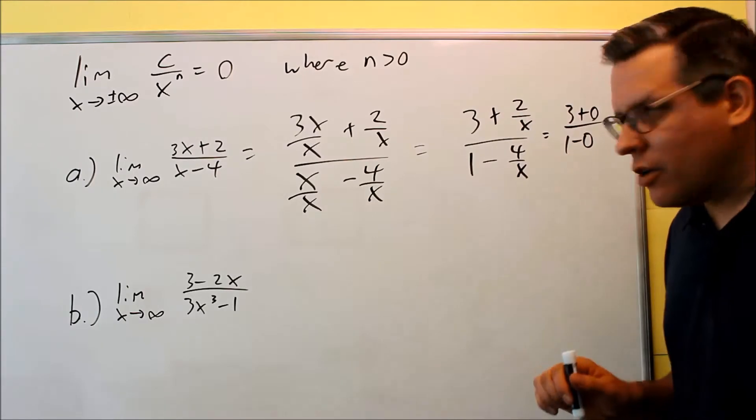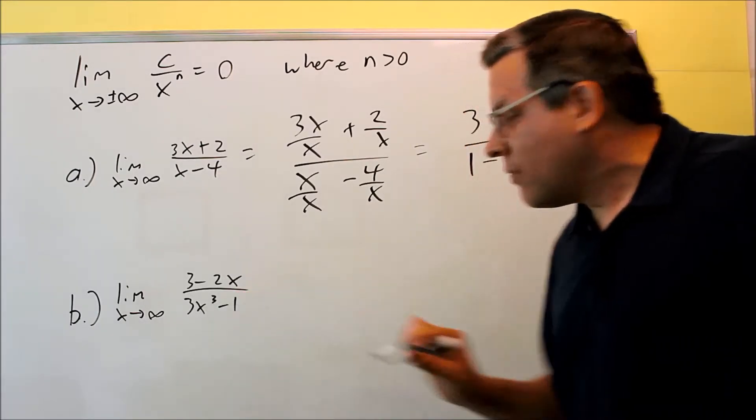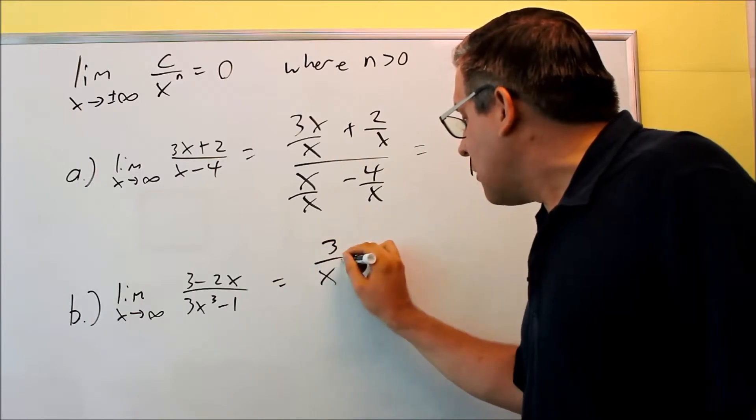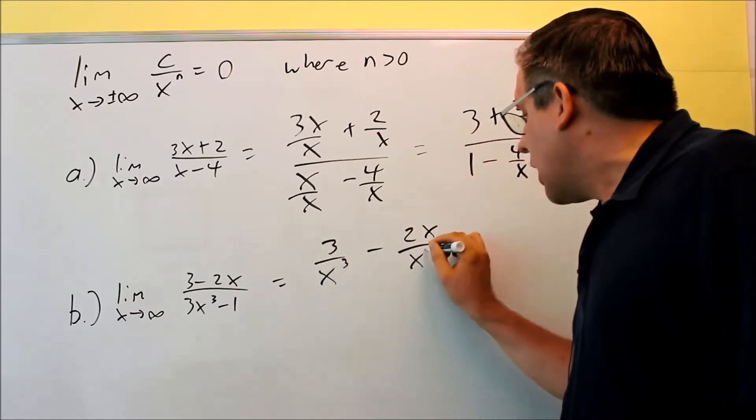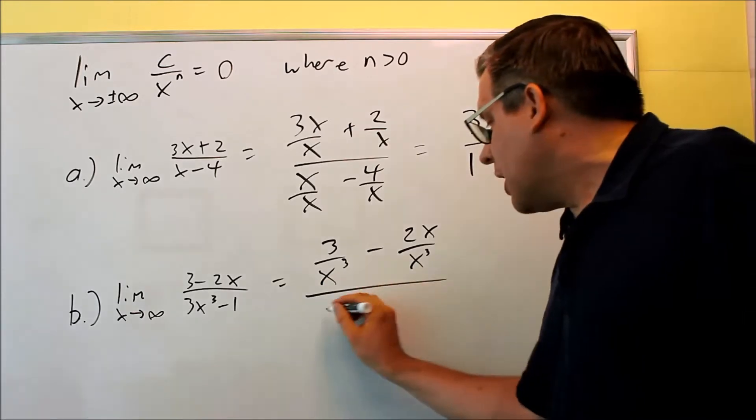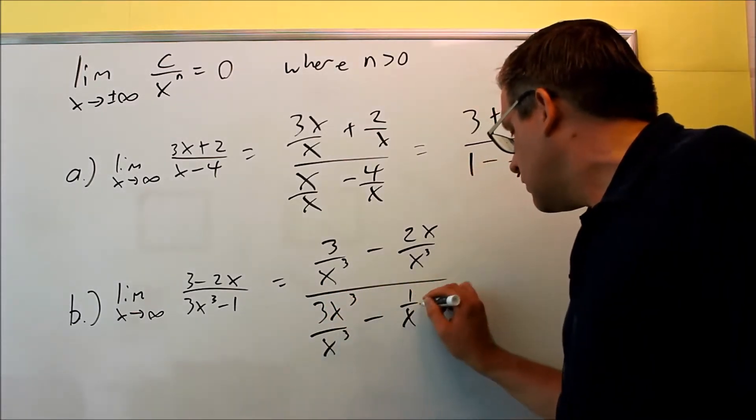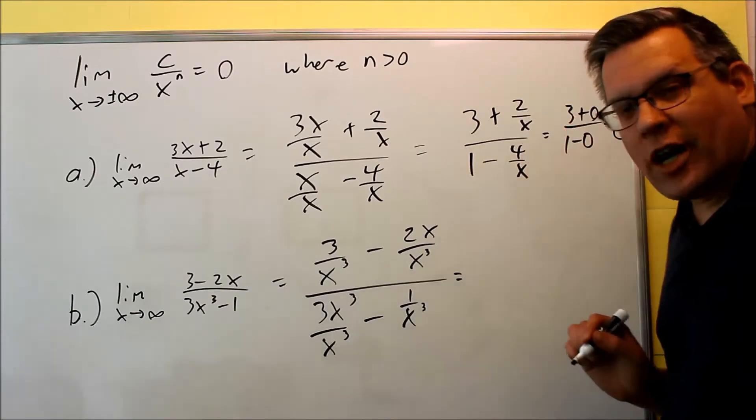Let's do that for this one down here. Highest power on the bottom is a cube, so this time I have to take everything top and bottom and divide it by the highest power on the bottom. We're dividing by X cubed top and bottom. And again, once we do that, you're going to simplify it.